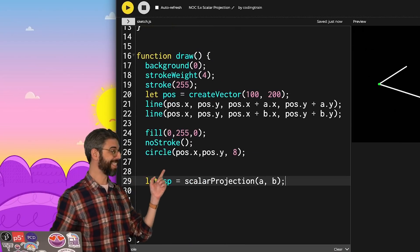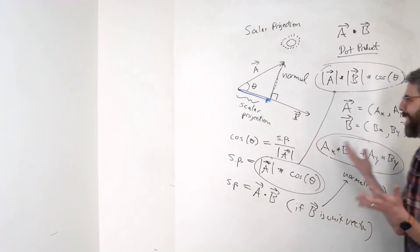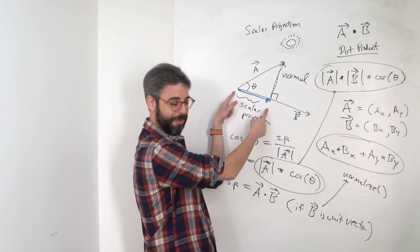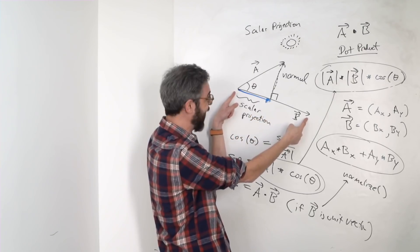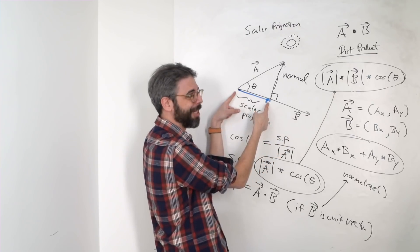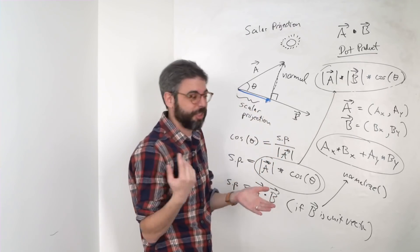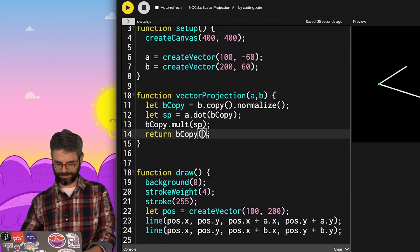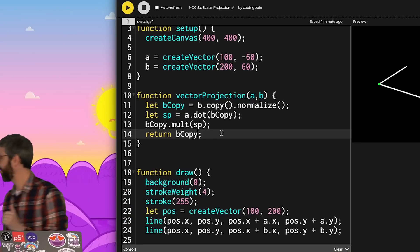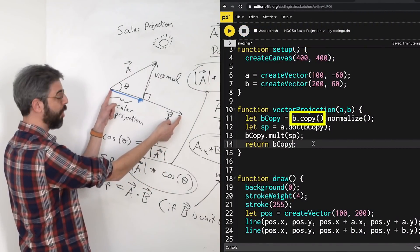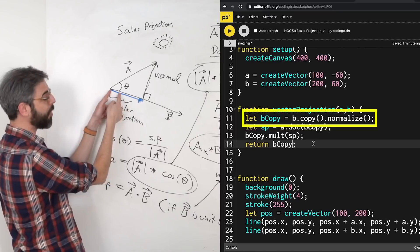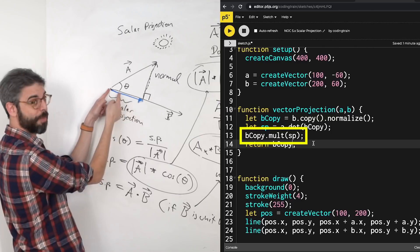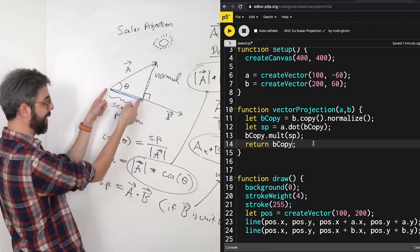So that's the scalar projection. But I kind of want to see just visually this vector projection. So what do I need to do? I could just take that vector B, make a copy of it, and then set its magnitude to the scalar projection. Maybe I should make that function be the vector projection. In other words, take the vector B, make a copy of it, normalize it, calculate A dot B to get this scalar projection length, and then take that normalized B and set its length to that. Now I've got this blue vector.